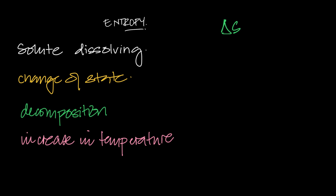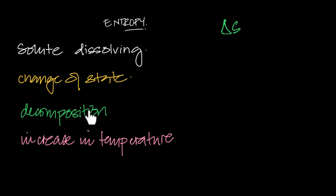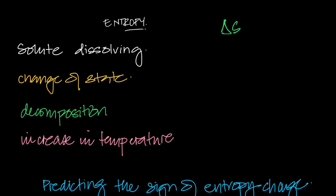Generally speaking, if a reaction increases disorder, we say entropy becomes more positive, so delta S is positive. If disorder decreases, delta S is negative. When there's a change of state or decomposition, you are either making gases or liquids, and those things help us predict the sign of entropy changes.